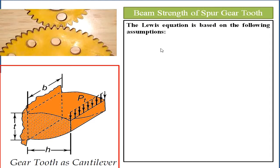In the Lewis equation, the basic assumption is that one tooth of the gear behaves like a cantilever beam, as shown in the figure. We consider only one tooth as a cantilever beam, fixed at the dedendum of the gear. Pt, the driving force, acts on the flank of the gear tooth. Here, b is the width of the gear tooth and t is the thickness measured at the root of the gear.